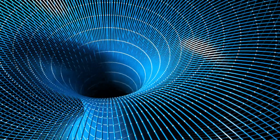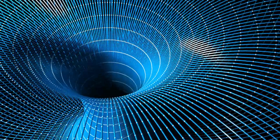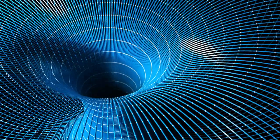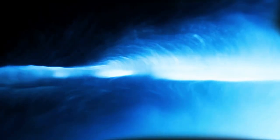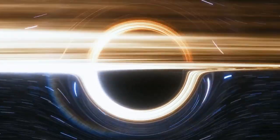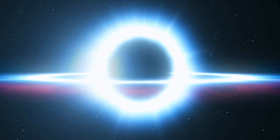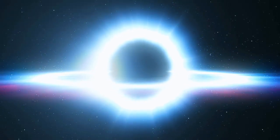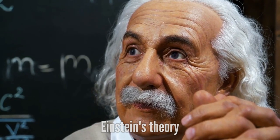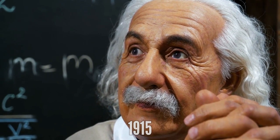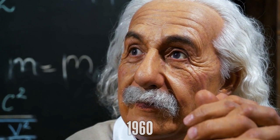While uncharged and non-rotating black holes are described by just one parameter, there are other types with more complex properties. Charged black holes have an electric charge that creates an electromagnetic field. Rotating black holes have angular momentum that causes them to drag space-time around with them. The event horizon is the region where gravity is so powerful that nothing can escape.